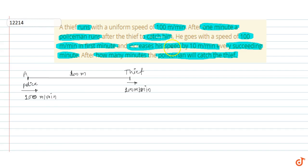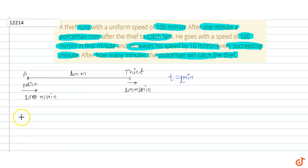So police को अपना speed increase करना होगा, जो कि question में given भी है कि हर minute के बाद वो 10 meter per minute से increase कर देता है। यह case था t=1 minute का। अब मैं t=2 minute के लिए case draw करता हूँ। Police भी same speed से run कर रहा है और thief भी same speed से run कर रहा है।